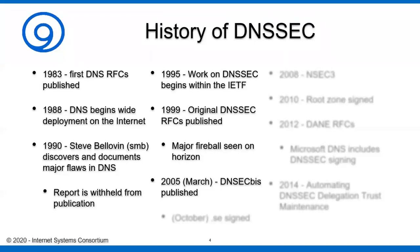It took another five years for DNSSEC Bis — the second modified version of DNSSEC — to be published. That was done in March of 2005, with a lot more operator input, and it was relatively successful. There were some things with rough edges that didn't work out too well, specifically NSEC, but that was solved relatively quickly.